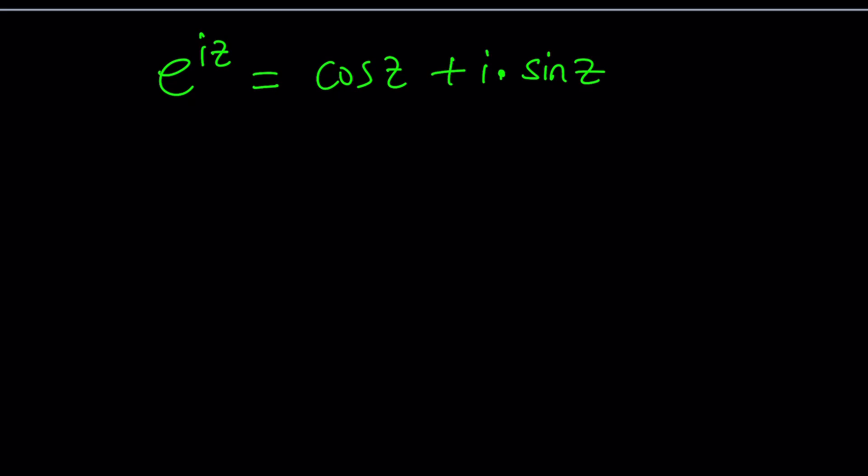So, this is e to the iZ. And then, we're going to replace z with negative z. That's going to give us e to the negative iZ. And the cosine of negative z is cosine z because cosine is even. But sine of negative z is negative sine of z because sine is odd. So, we get two equations. Let's go ahead and work these out.